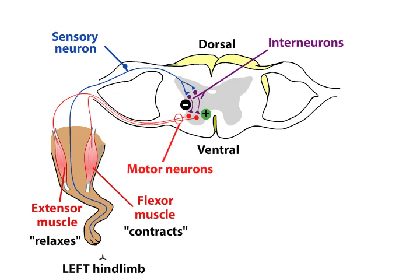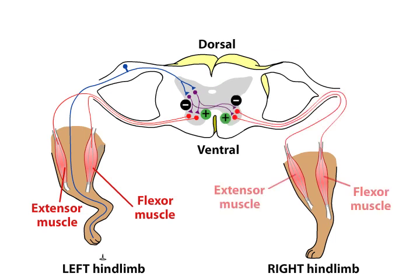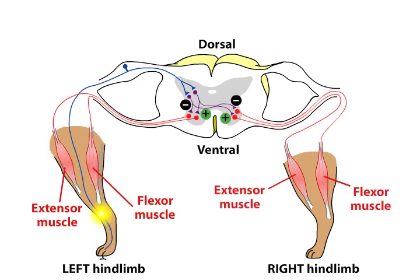With the withdrawal of one limb, the weight shifts to the contralateral limb. Interneurons also connect to motor neurons on the opposite side so that the muscles in the other limb can adjust to the shift in weight distribution.